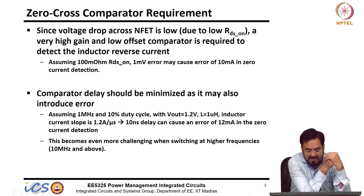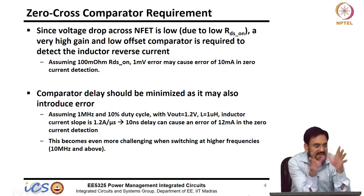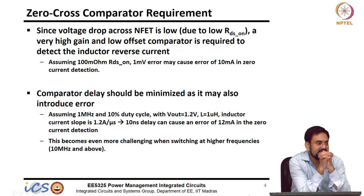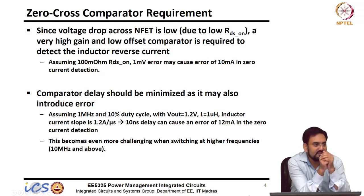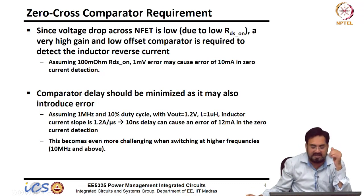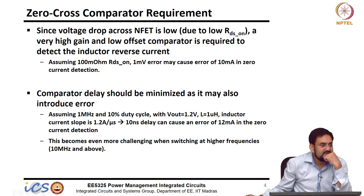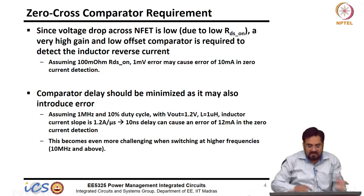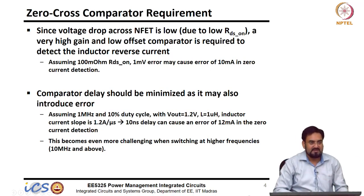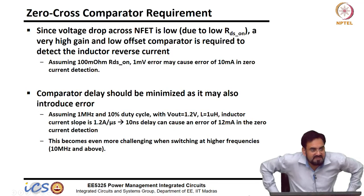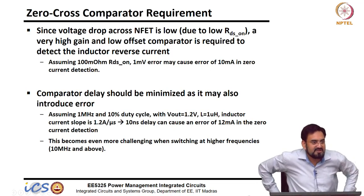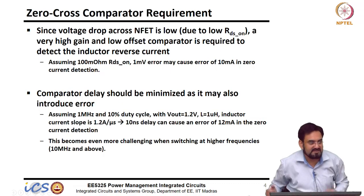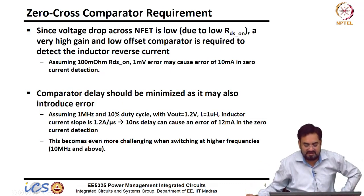After doing everything if you still cannot achieve very good accuracy, you try to compensate. Compensate means instead of detecting 0, if you are seeing a 10 milliamp error, instead of turning off at 0 you turn it off at 10 milliamps, so it will go to 0. That is how you compensate, but you have to make sure it is stable across PVT — plus or minus 10 to 20 percent variation is okay, but it should not have 100 percent variation, otherwise you may not get the benefit.